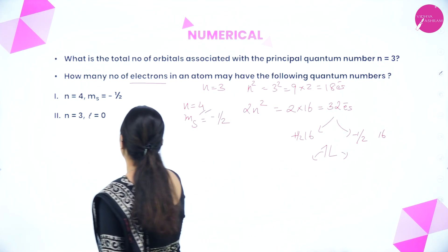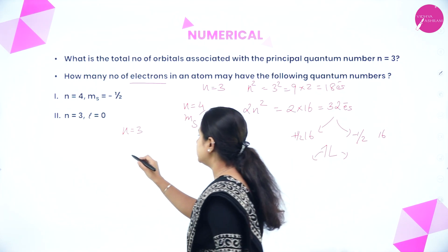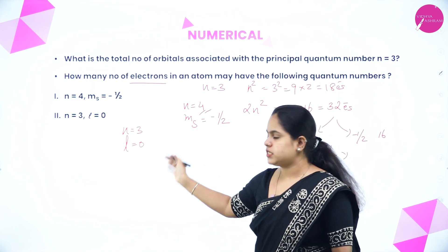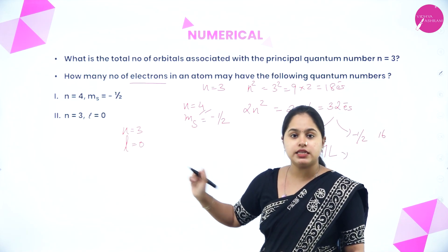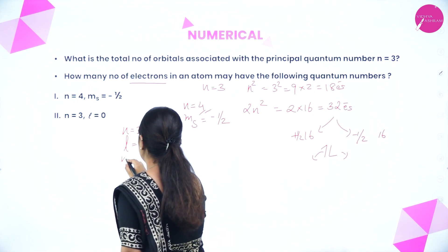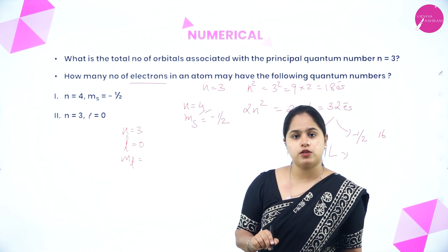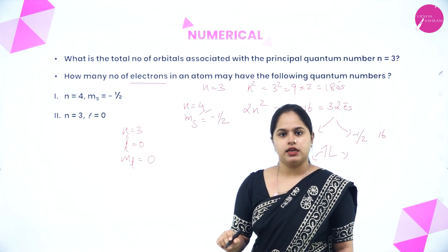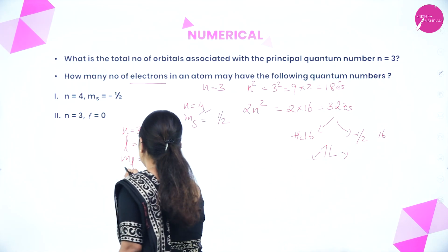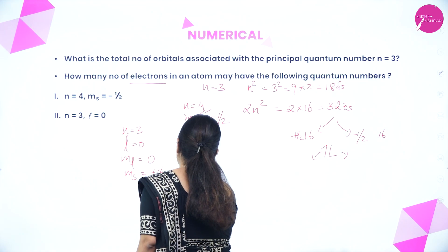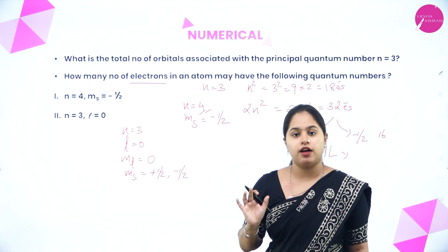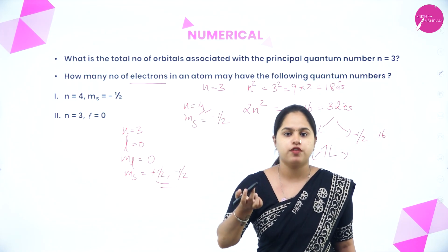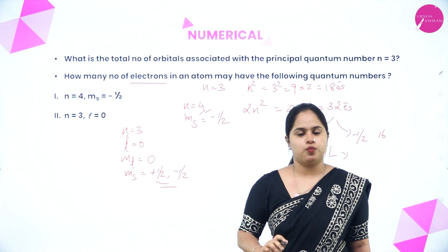Third question: How many electrons can have n=3 and l=0? l=0 means ML ranges from −0 to +0, so only ML=0. That means only one orbital is present, which can hold 2 electrons (one with +½ and one with −½ spin). So 2 electrons can have this set of quantum numbers.